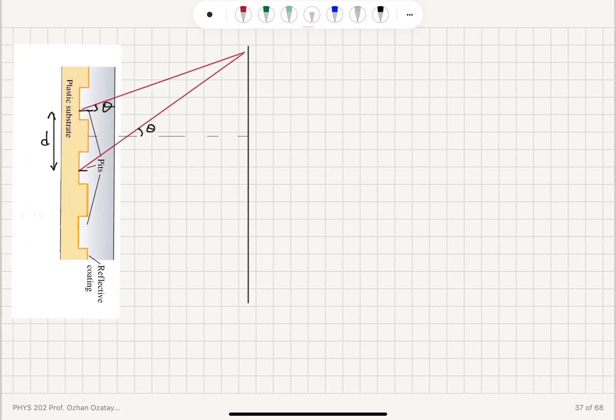Now, if you look at your pits here, we have the reflected light coming from these pits forming an interference pattern on the screen. So at a certain angle theta, we will see the maxima.